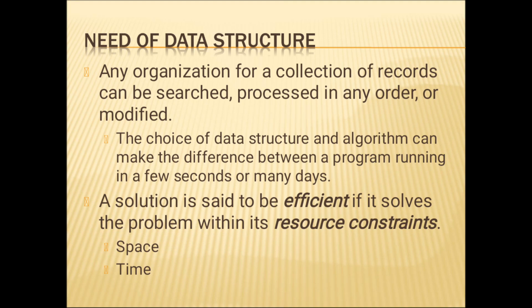If you have a roll call list, you can divide the whole list into parts. For example, if you have roll number 121, and the list is divided into sections — 1 to 100 and 101 to 200 — then you can directly go to the second section and search there. This way you can easily find the number and save time. This is why we need data structure.